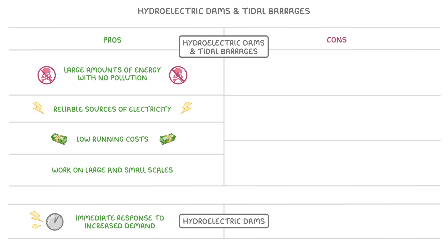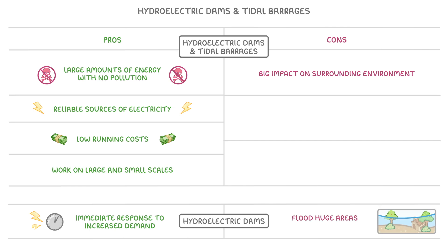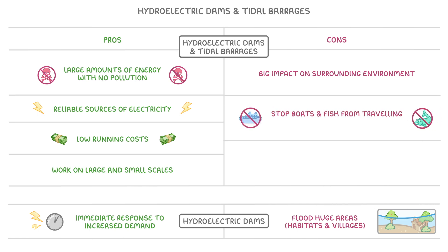Their main downside is that they often have a big impact on the surrounding environment. Hydroelectric dams, in particular, often flood huge areas because of their size, and this can end up submerging important habitats, and sometimes even whole villages. Both structures also sometimes stop boats and fish from travelling up or down the river, which can negatively affect fish migrations.